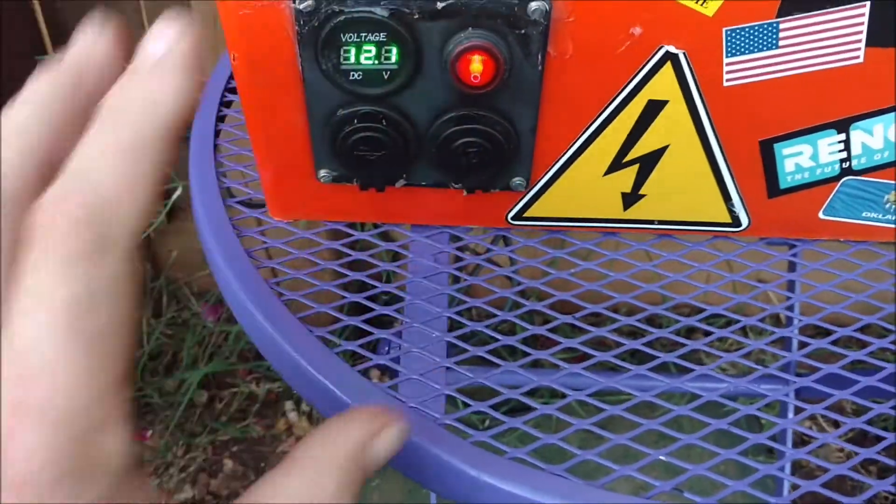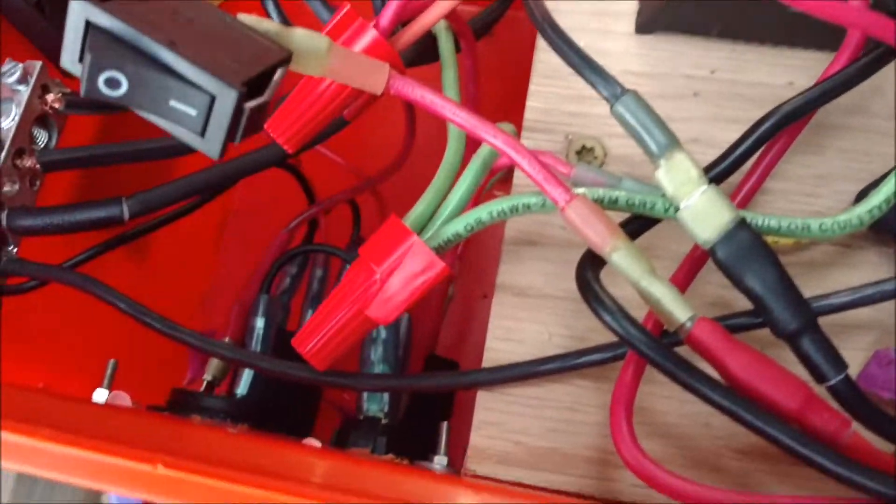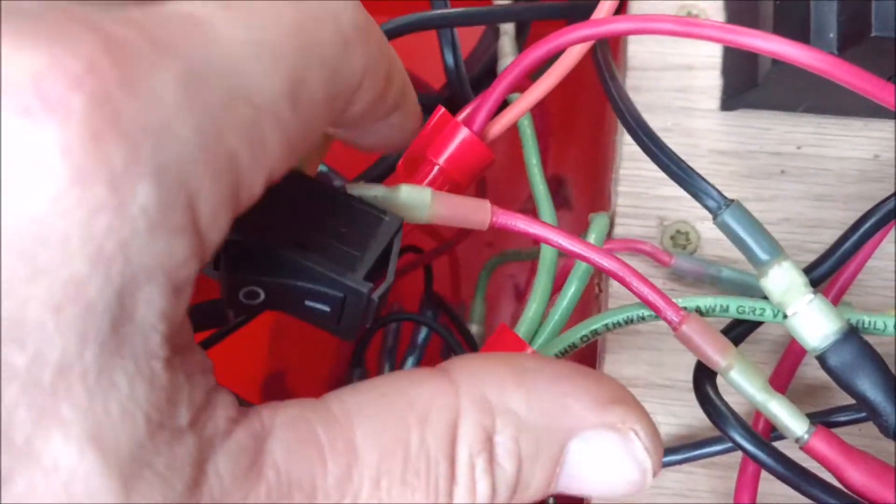It's not switched, it's just direct, 30 amp fuse on there and I use 10 gauge THHN ROHS heavy duty wire. The socket itself is probably good for 15-20 amps but the wiring is good for 30, so a little overkill there but safety first. I just bundle them together there.